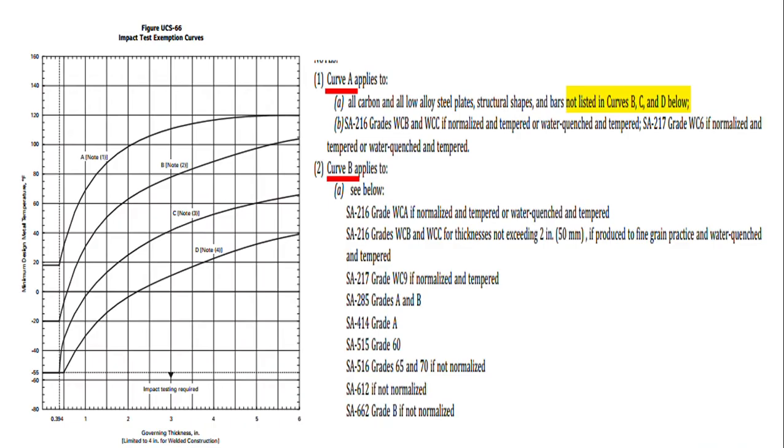This is the figure for impact test exempted curve. There are four figures A, B, C shown in this figure. So for curve A, it is all carbon and low alloy steel which is not listed in curve B, C, D. So if you cannot find your material in curve B, C, D, then the material falls under curve A.